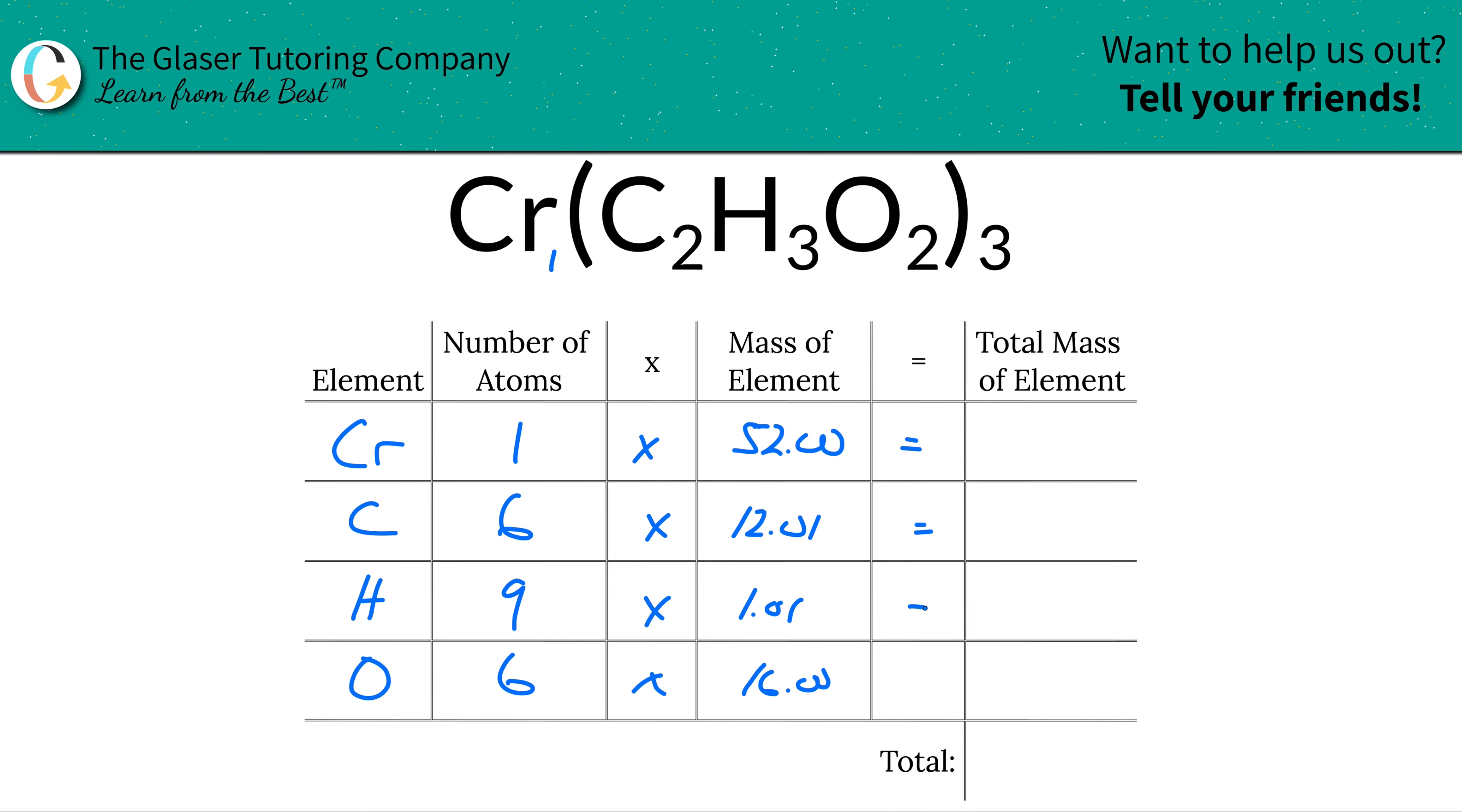Now, to find the total mass of each element in the compound, we just have to multiply this row across. So the total mass of chromium in that compound is 52. The total mass of carbon is 6 times 12.01, which works out to about 72.06.